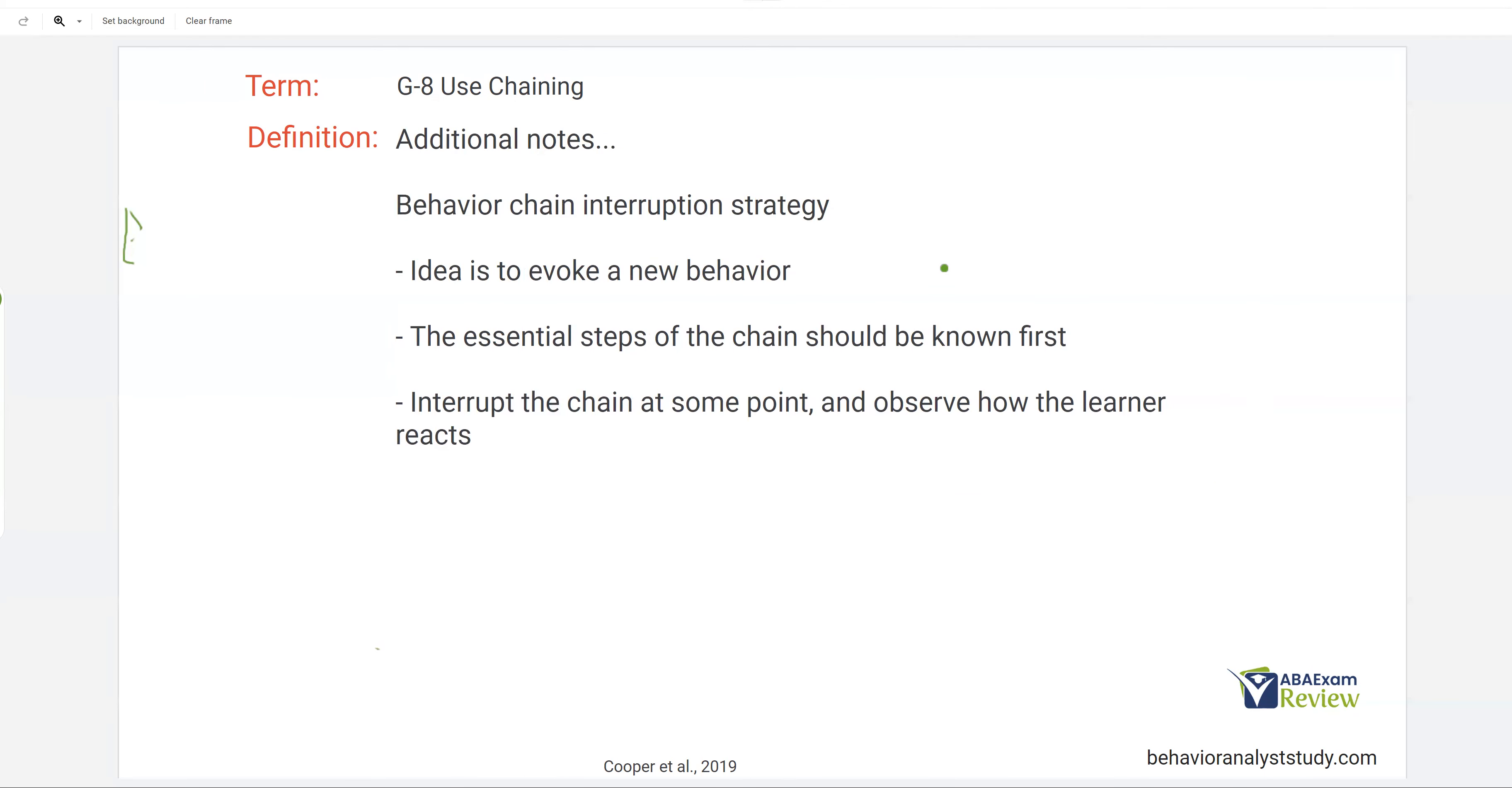One more note on the behavior chain interruption strategy or the BCIS. You might see this acronym sometimes. This is when we have taught a chain. That's very important. The essential steps of the chain need to be known first before we can do a behavior chain interruption strategy. Because with the BCIS, let's say we have a four-step chain, one, two, three, four. We're trying to evoke a new behavior. So what we would do is let's say we're going to interrupt the chain here. And so at two, we're going to change something in the environment where the chain gets interrupted. And the hope is we get a brand new response out of it.